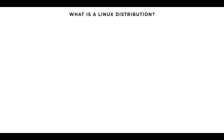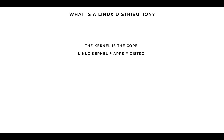What is a Linux distribution? Well, the kernel is the core, and every distribution has a Linux kernel. A Linux kernel plus specific applications make a distribution. Two of the most popular distributions are Red Hat and Ubuntu, which is the OS we will be using.